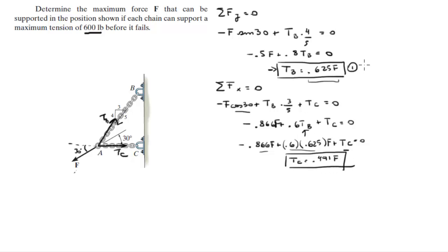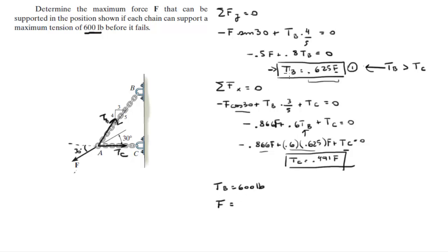Looking at both values: Tb equals 0.625F and Tc equals 0.491F, so Tb is larger than Tc. Since Tb is bigger and the maximum tension is 600 pounds, the maximum force governs on Tb. So we set Tb equal to 600 pounds, and dividing by 0.625, we get F equals 960 pounds.